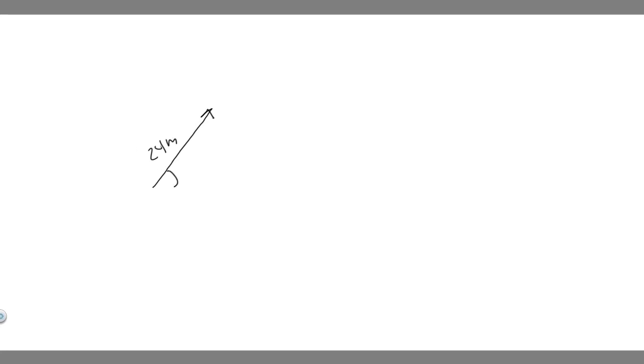So how do we solve this? The first thing you want to do is draw out your vector. So we have this vector, and it's going to be magnitude of 24 meters, and its angle or direction to the horizontal is going to be 56 degrees. So this is the first thing you always want to do — just draw it out.